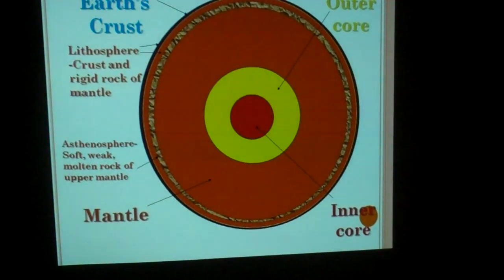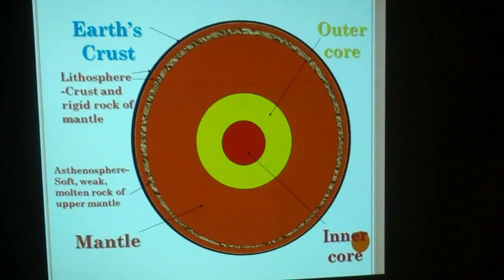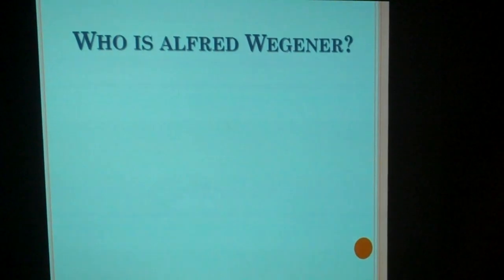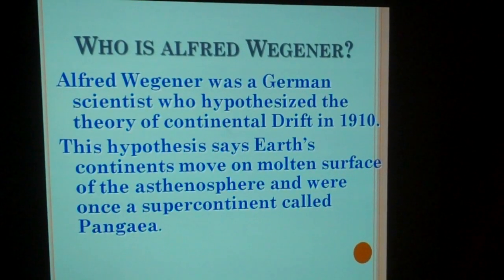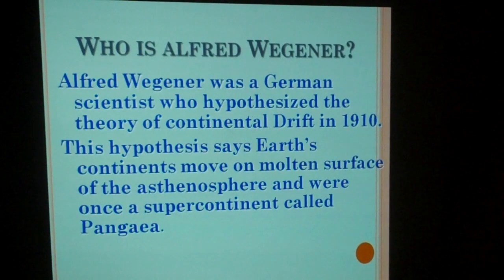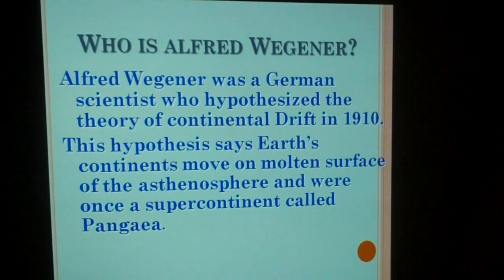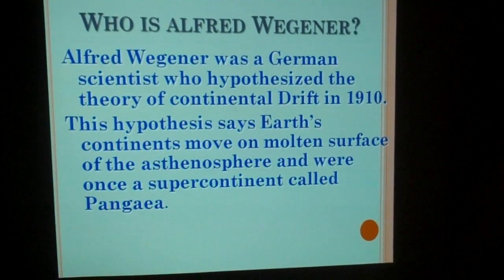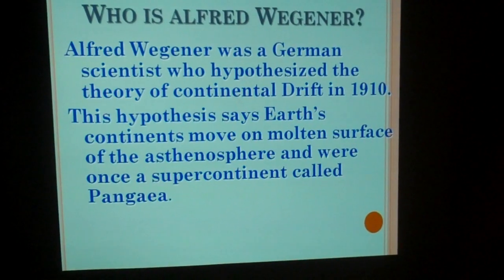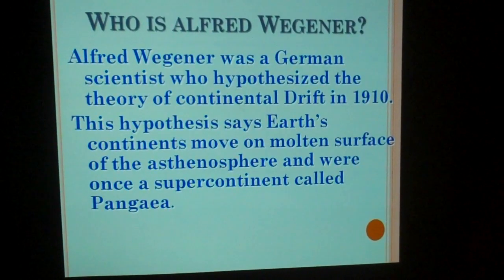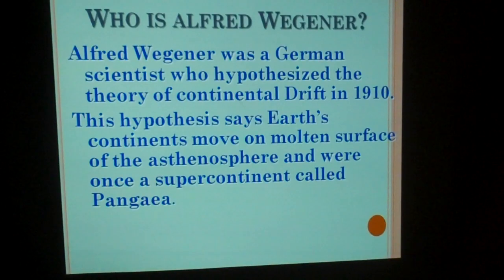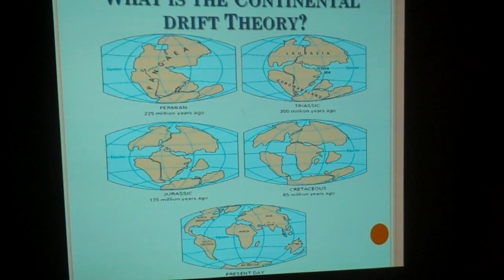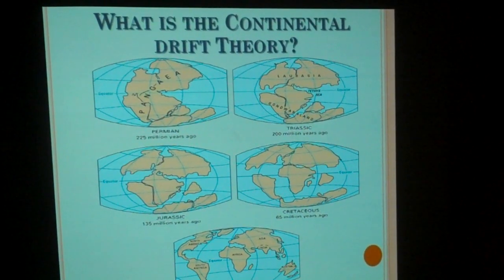The outer core is the one liquid layer. Use this to reference for your test and study guide. Who is Alfred Wegener? He was a German scientist who hypothesized the continental drift theory in 1910. They didn't have a lot of technology then, but he believed that the continents were floating around on the asthenosphere layer and moving into different areas. He believed that at one time all the continents were together, called Pangea. This shows how we came to where we are in present day.